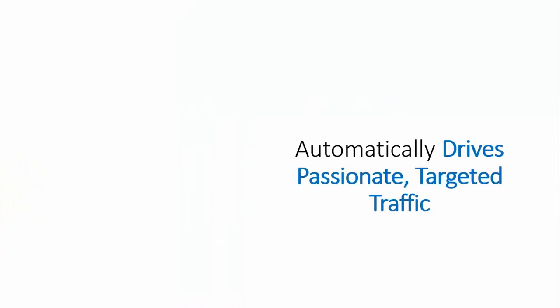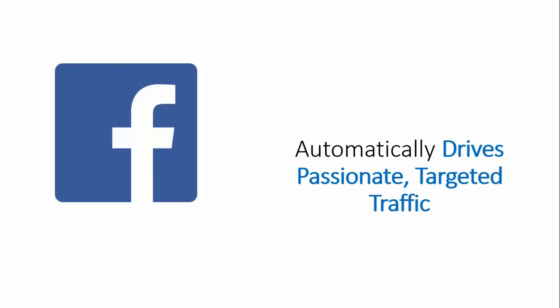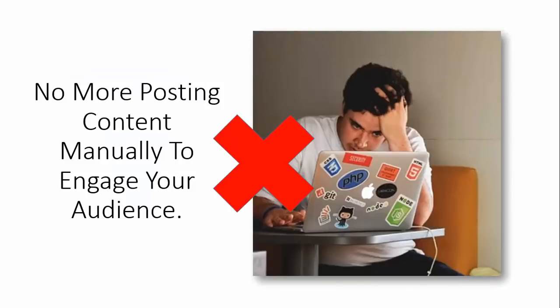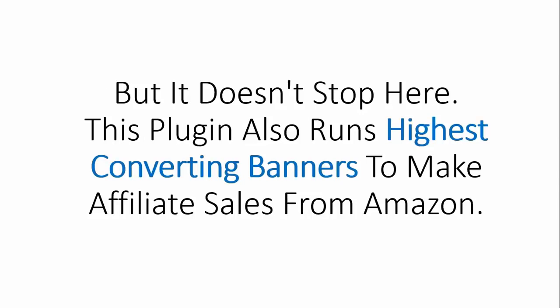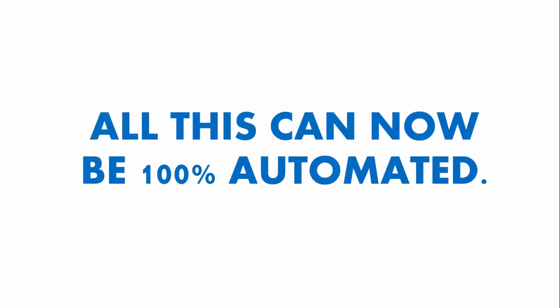This brand new WordPress plugin also automatically drives passionate, targeted traffic from Facebook, Twitter, and Tumblr. No more posting content manually to engage your audience, and no more spending hundreds of dollars running ads or hiring expensive VAs to manage your social shares. This plugin will also run the highest converting banners to make affiliate sales from Amazon. All this can now be 100% automated.